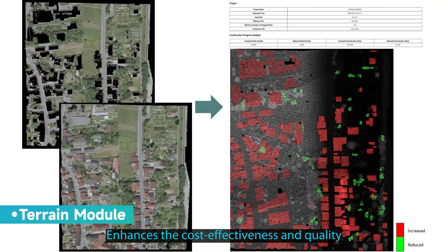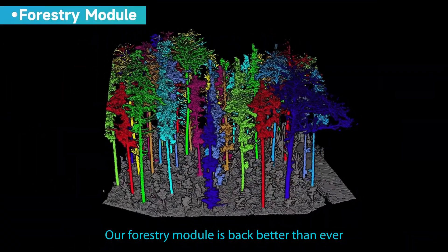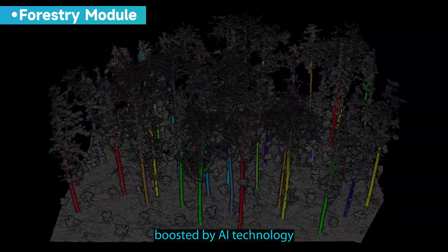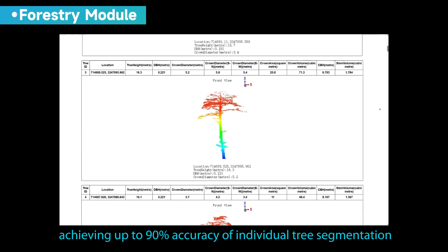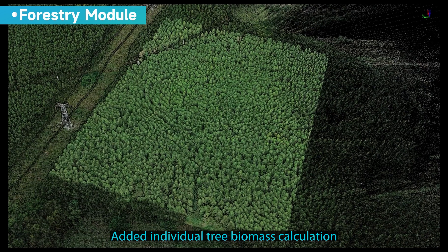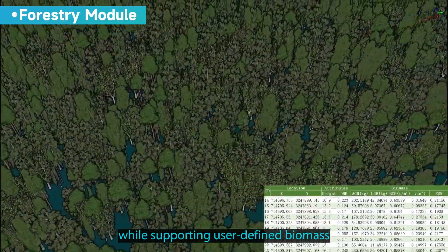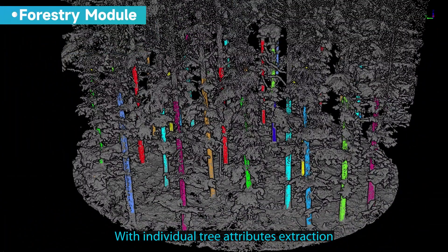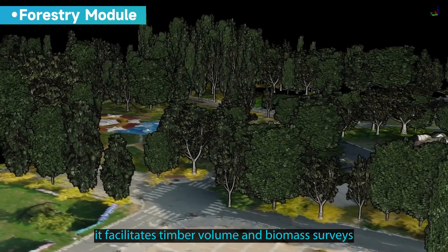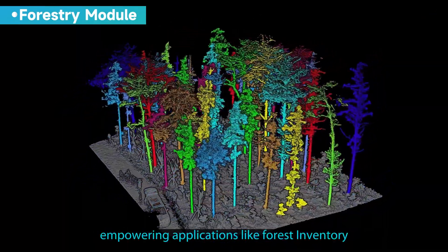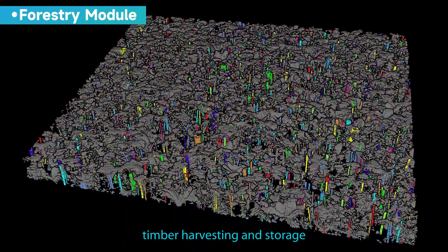Our forestry module is back better than ever, boosted by AI technology, achieving up to 90% accuracy of individual tree segmentation. Added individual tree biomass calculation while supporting user-defined biomass, with individual tree attributes extraction and forest stand parameter inference. It facilitates timber volume and biomass surveys, empowering applications like forest inventory, carbon monitoring, timber harvesting, and storage.